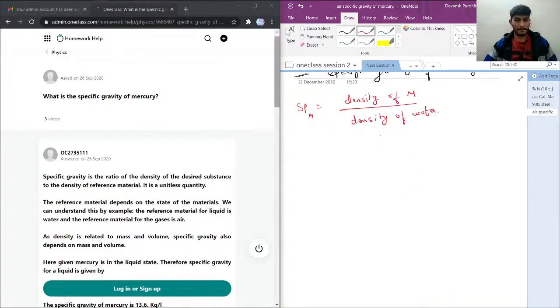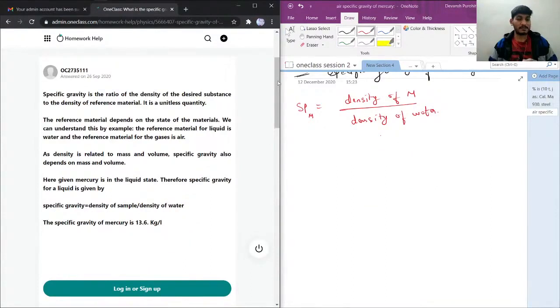So let's see the answer given by junior tutor. So specific gravity is the ratio of the density of the desired substance with density of reference material. It is a unitless quantity. The reference material depends on the state of material. We can understand this by example. The reference material for liquid is water and the reference material for gases is air.